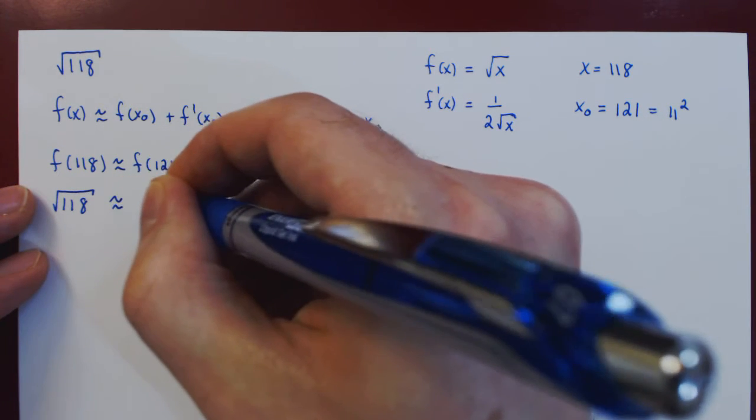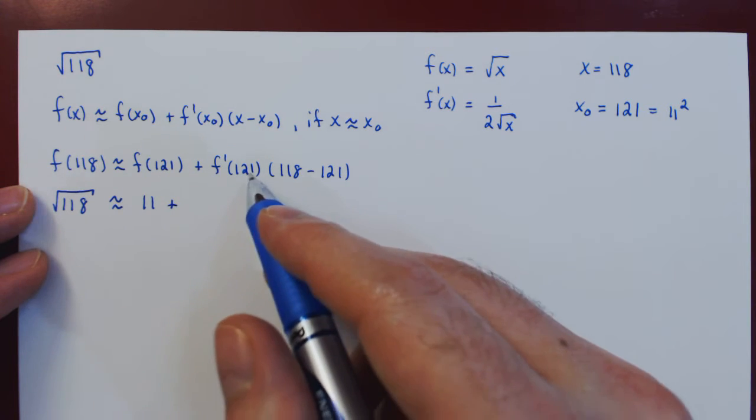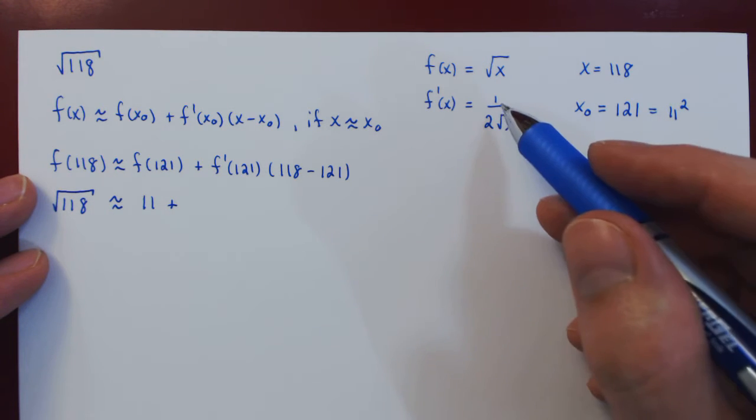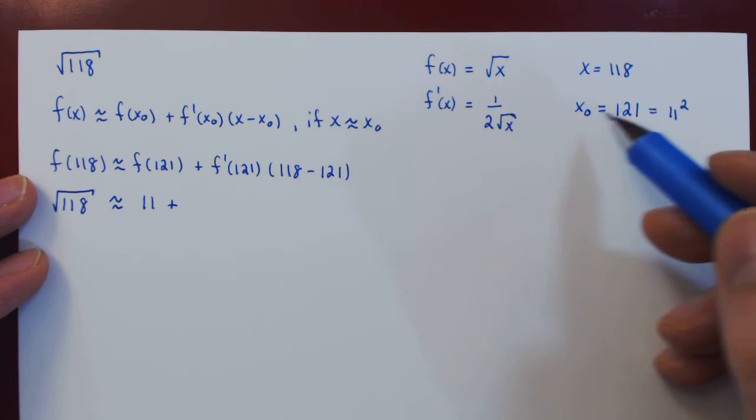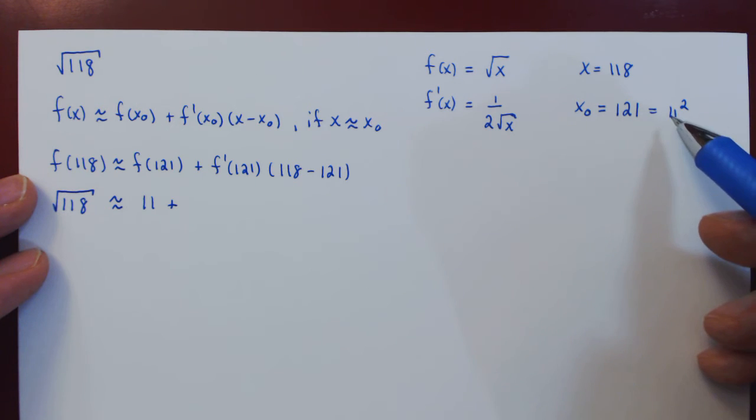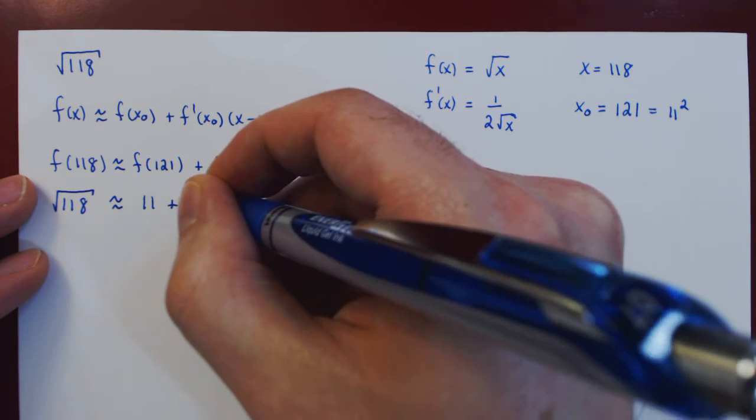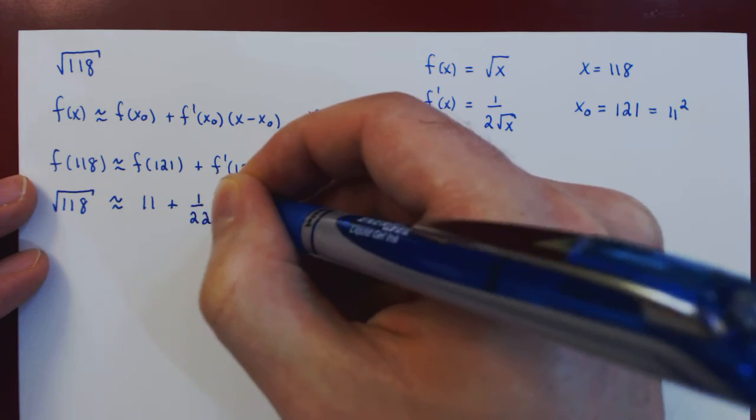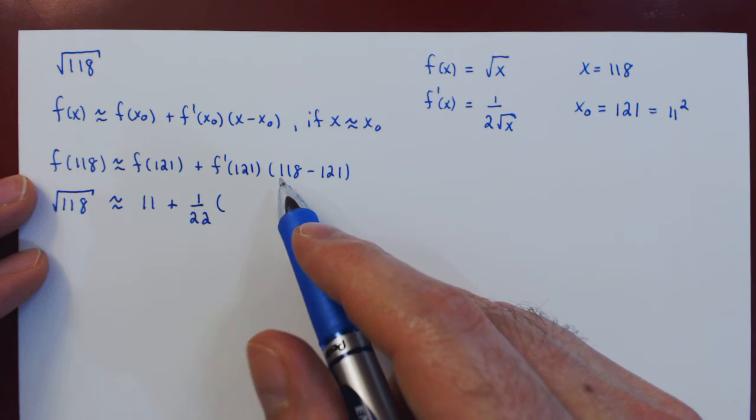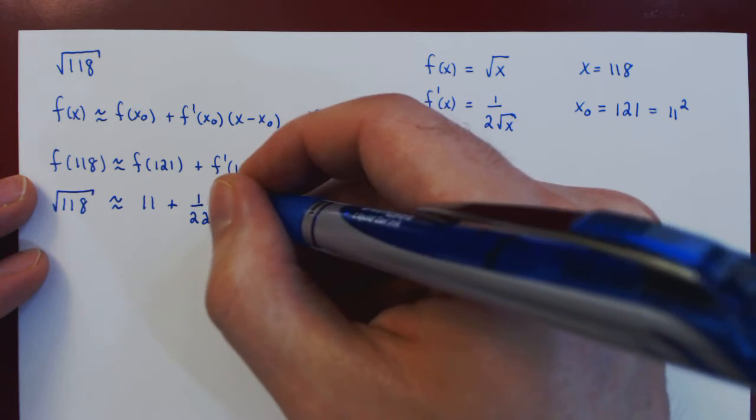plus the derivative at 121. Well, we have 1 over 2 times the square root of 121. But again, the root of 121 is 11, 2 times 11 is 22. So 1 over 22 times 118 minus 121, negative 3.